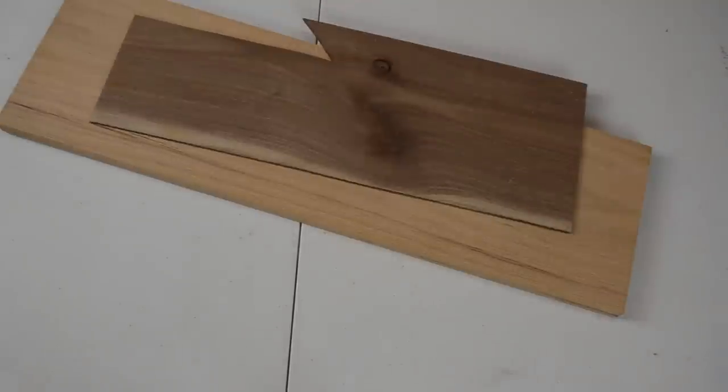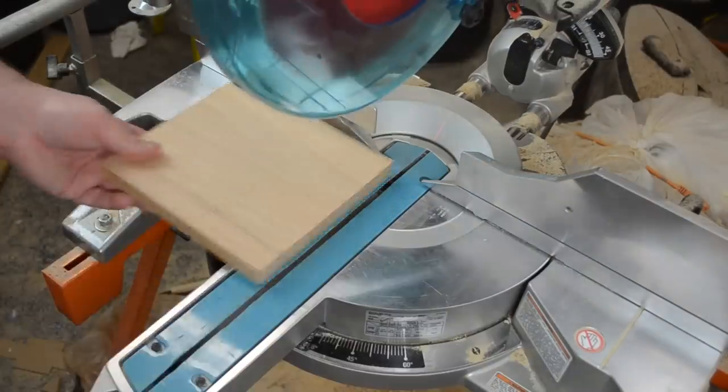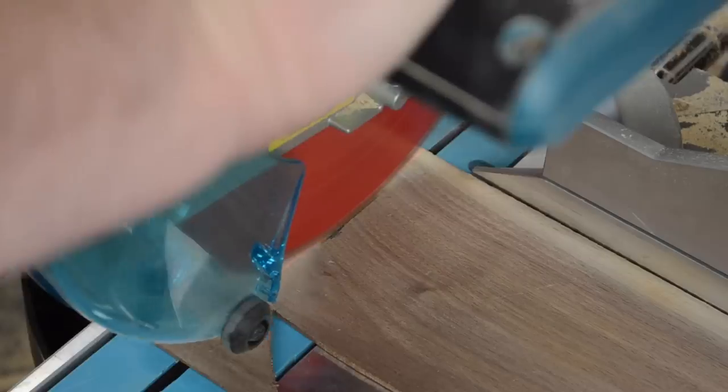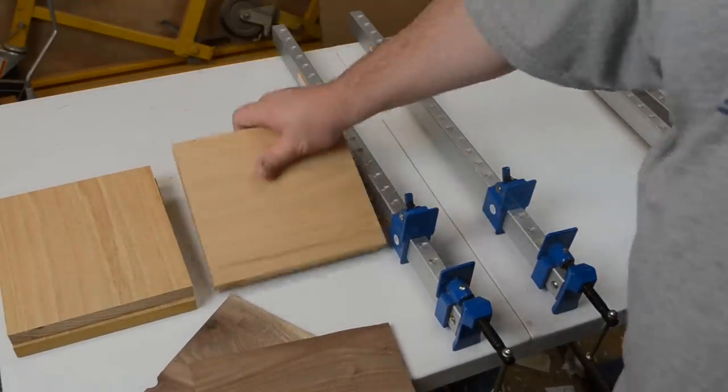I started out with a piece of oak that I had lying around, along with the walnut that I used for splines in my picture frame. Cutting the oak and the walnut to size over at the miter saw, then I proceeded to glue up the pieces, alternating the oak and walnut.